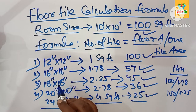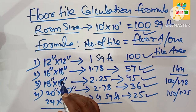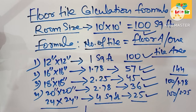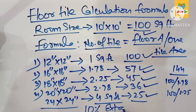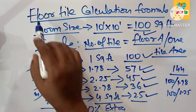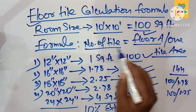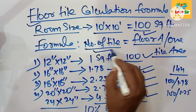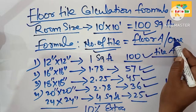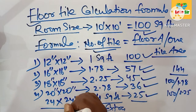Our recommendation: some tiles may be damaged during transportation or installation. That's why you should also buy 10 percent extra tiles on top of the total you need. The floor tile calculation formula is: number of tiles needed equals floor area divided by one tile area. Thank you.